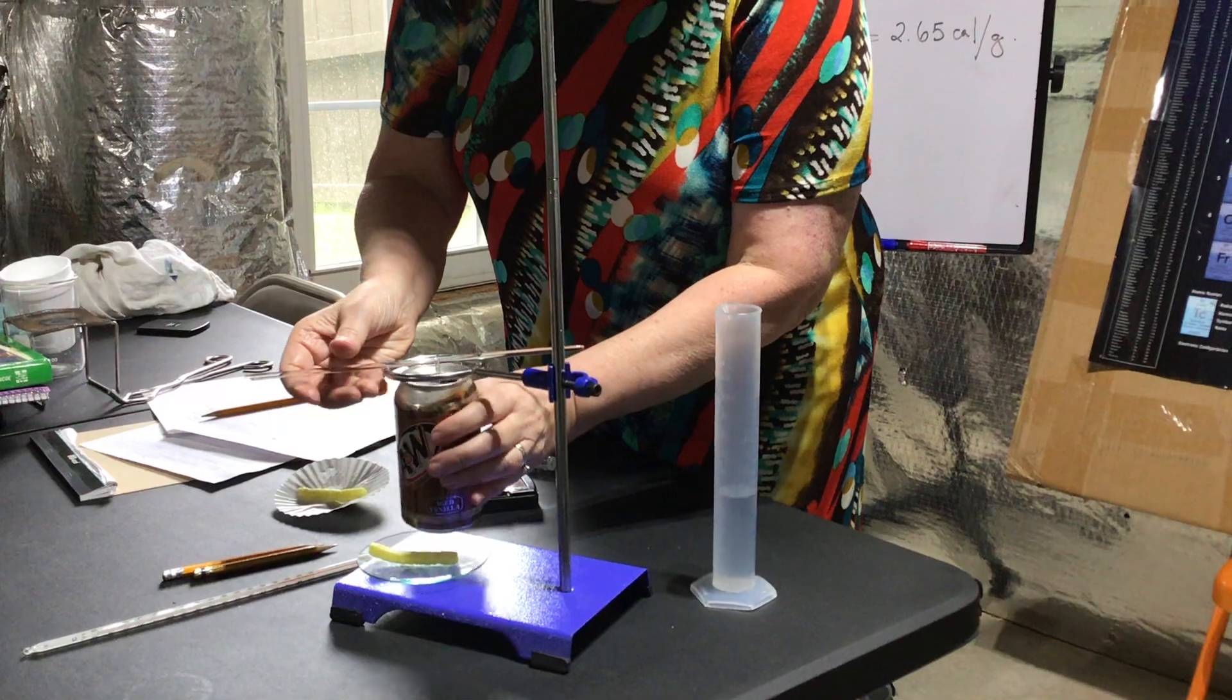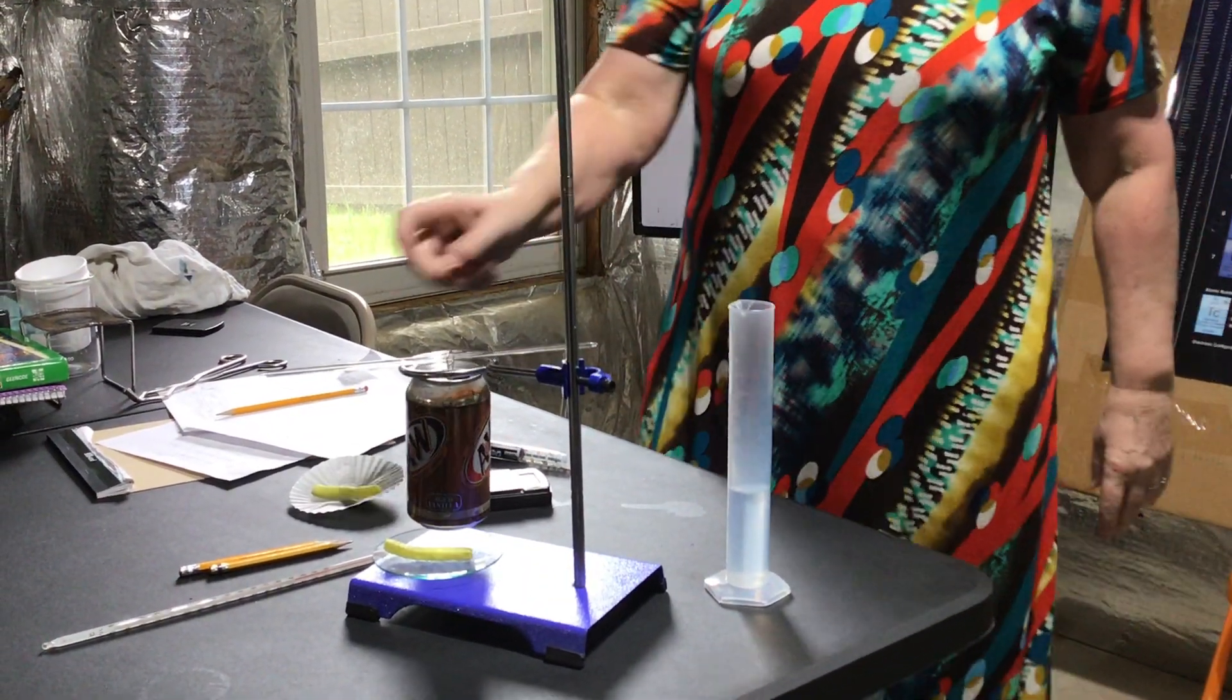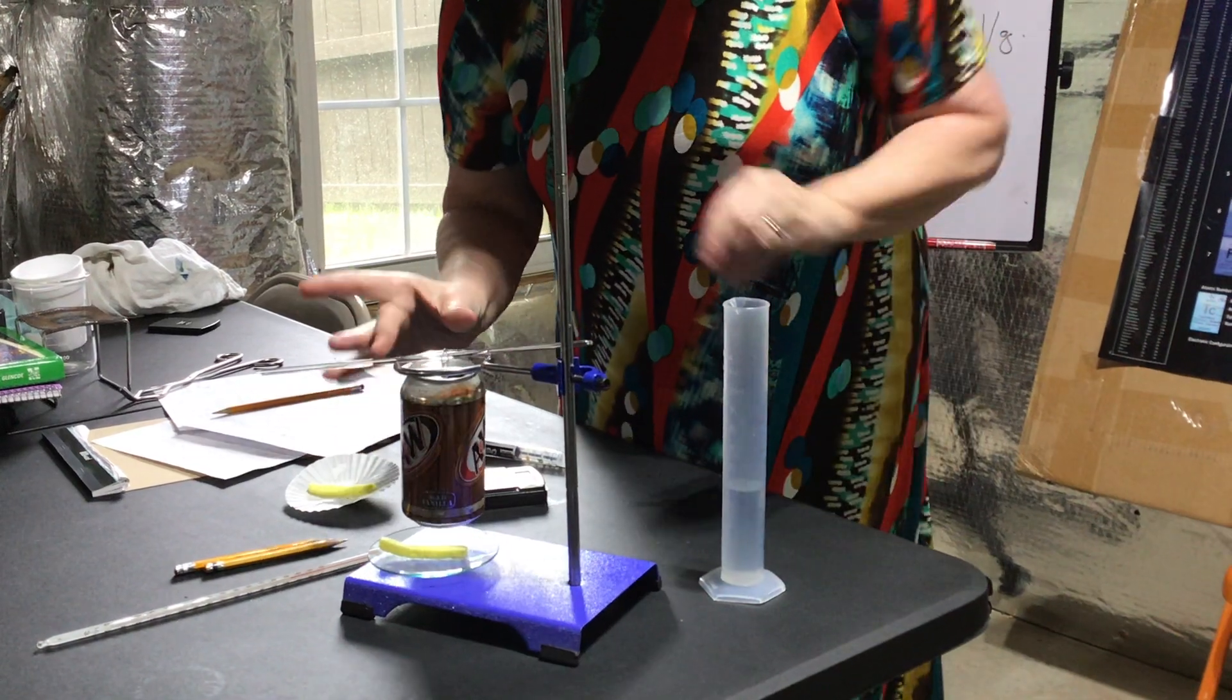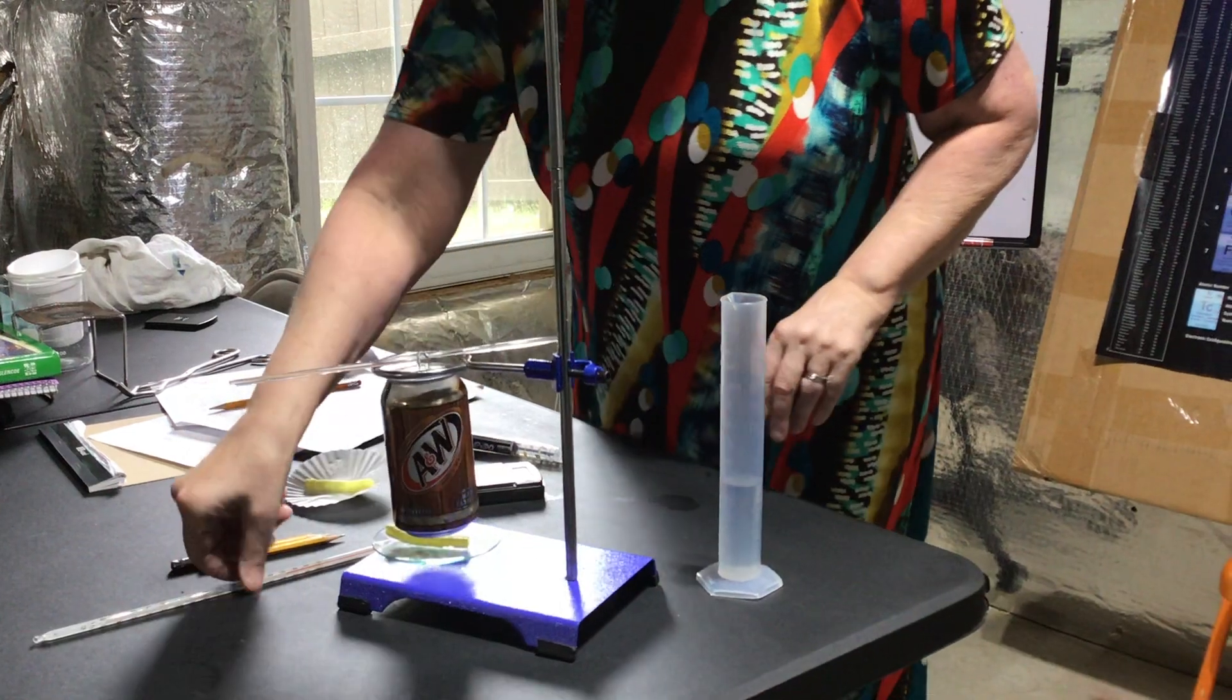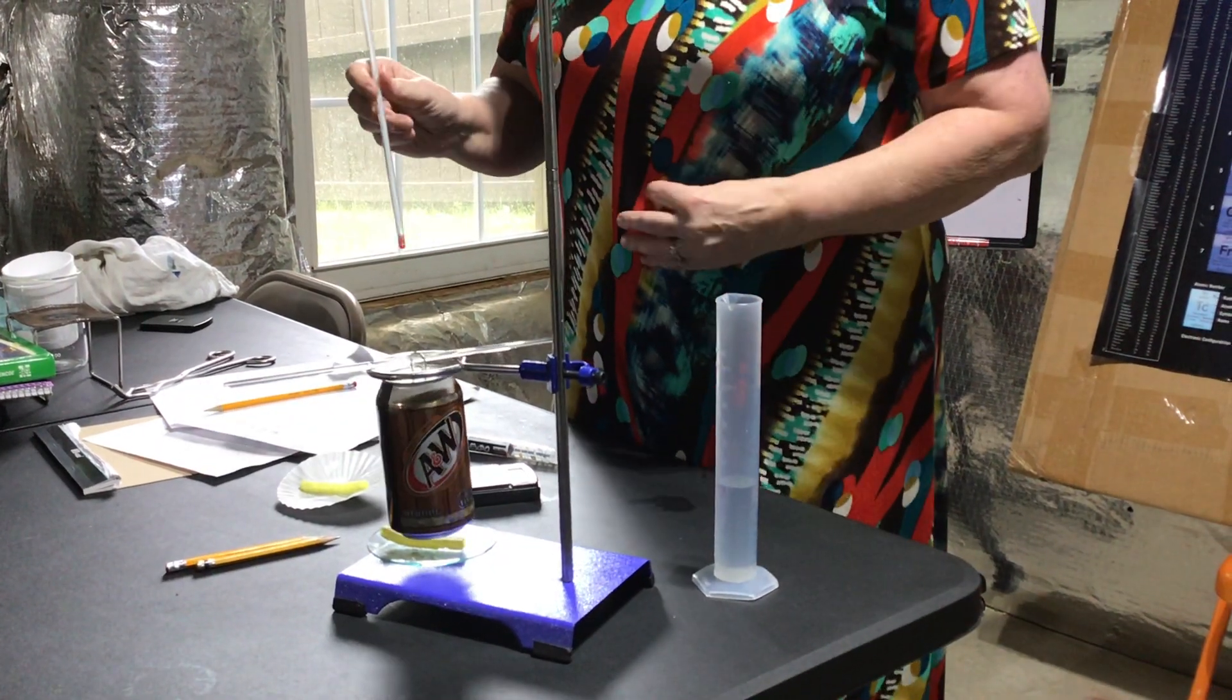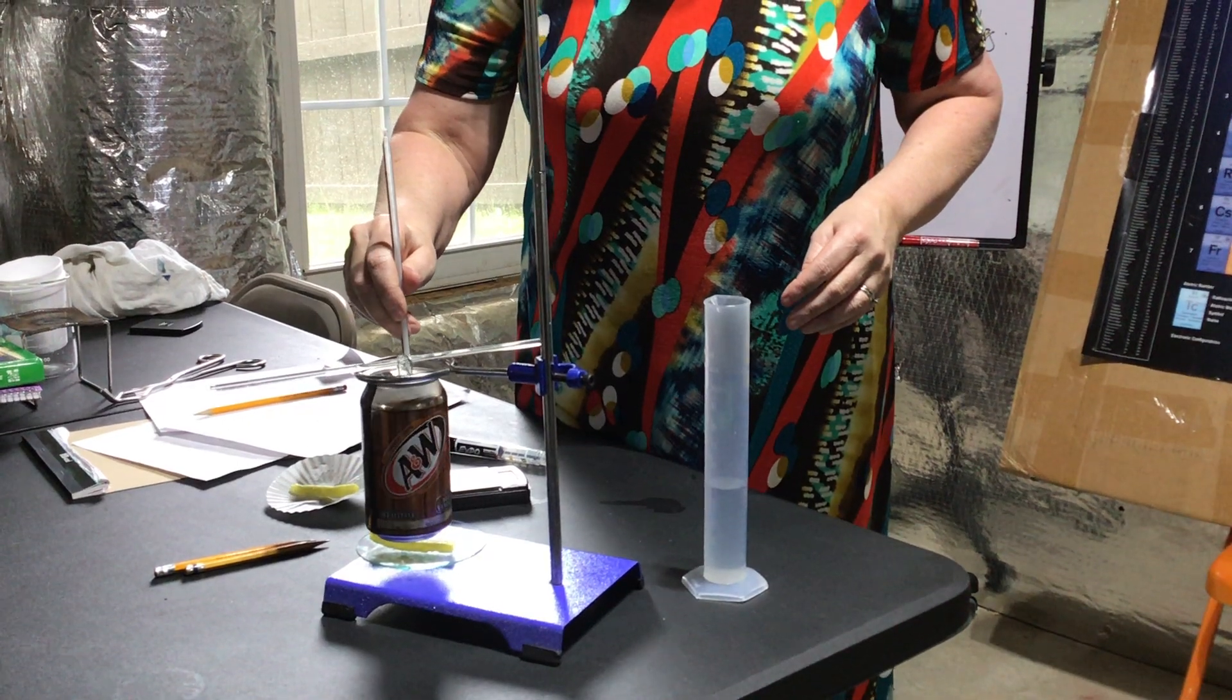Remember you just thread it through. Have extra cans when you do this because those little tabs are made from aluminum and they pop off. You want this over whatever you're testing - in this case this is a puff. You're going to get the temperature of the water before you heat it.